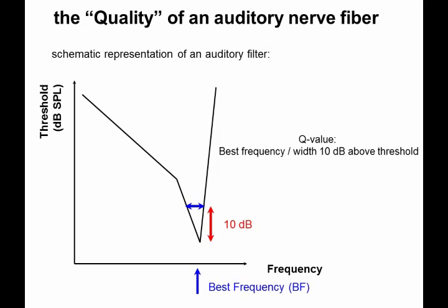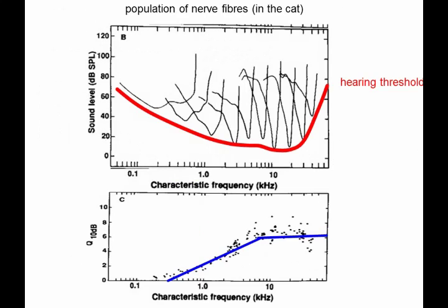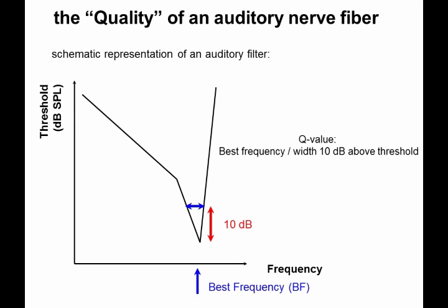The Q10dB values we encounter in humans are something around 6 to 10, which means you have a frequency six times higher than the bandwidth at that point. If you made the filters much, much narrower — so higher Q — every nerve fiber would be very specialized for a very specific frequency. That would be good in terms of frequency selectivity, but what would that mean in the time domain? It would mean those filters would be ringing very, very long. It's always the trade-off between time and frequency: the wider your filters, the better the time resolution; the narrower the filters, the worse the time resolution.